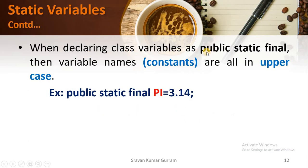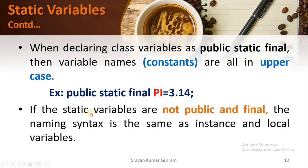When declaring class variables as public static final, the variable name should be in uppercase letters. For example, if you want to use a pi value of 3.14 as a constant, the static variable name should be written in uppercase. If the static variables are not public and final, the naming syntax is the same as for instance and local variables — use uppercase only for constant variables, and lowercase in the remaining cases.